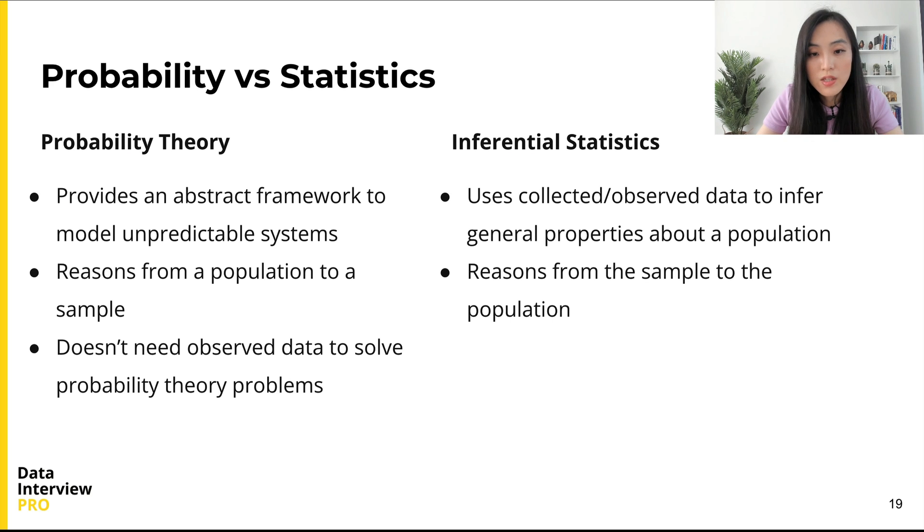By comparison, inferential statistics use either collected or observed data to infer general properties about the population. It reasons from the sample to the population, and we need data to make an inference. So the problems considered by probability theory and inferential statistics are kind of the inverse of each other.